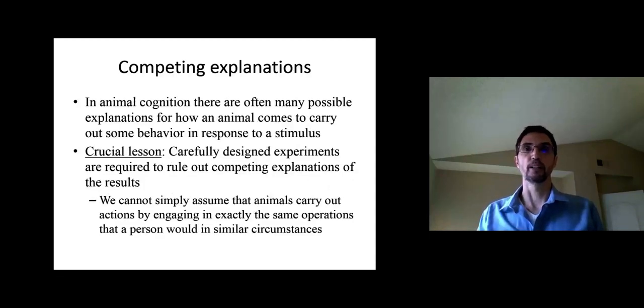So this is one of the lessons so far of this course. We're going to see that in animal cognition, whenever you have some animals engaging in some sort of behavior, there's often many possible explanations for how the animal comes to carry out that behavior in response to some stimulus. So the lesson here is that we have to be careful in our interpretations of the behavior. And if we want to figure out what actually is going on inside the mind of an animal, we have to construct carefully designed experiments. Only by designing carefully designed experiments can we rule out alternative explanations of behaviors.